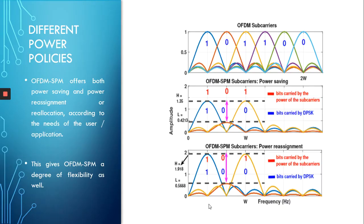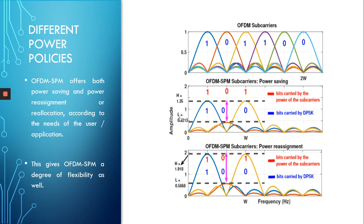To give a clearer picture: for regular OFDM, all subcarriers are at the same power level and each carries one bit. When we use OFDM-SPM, we use half the number of subcarriers — half the power is saved, meaning we transmit the same number of bits using only half the power. But since we save this power, if we want to we can reallocate it to the subcarriers. When power is reallocated, the peaks of the subcarriers are higher than in the power-saving case, resulting in better performance and less susceptibility to noise.